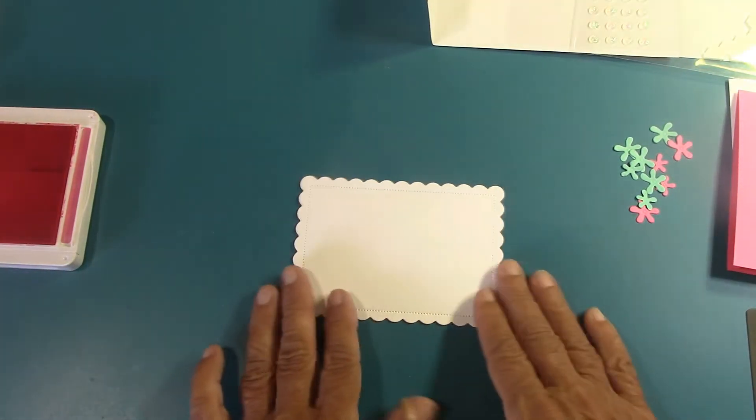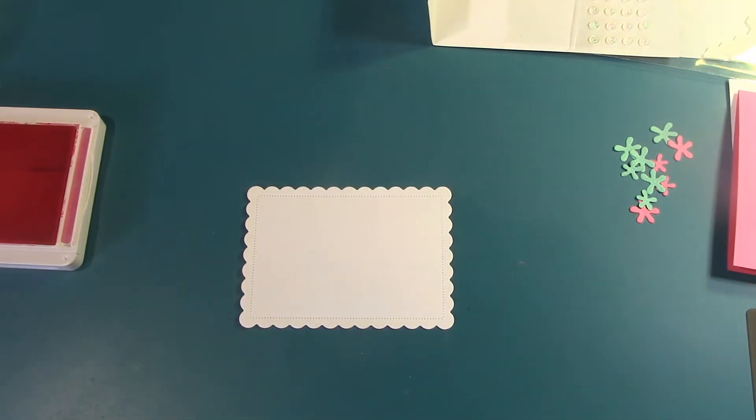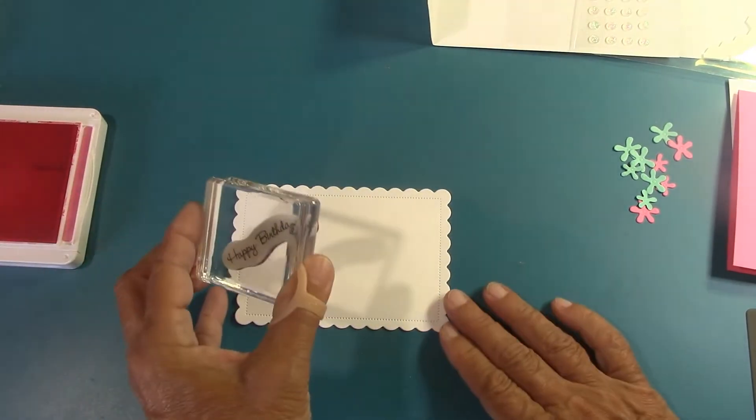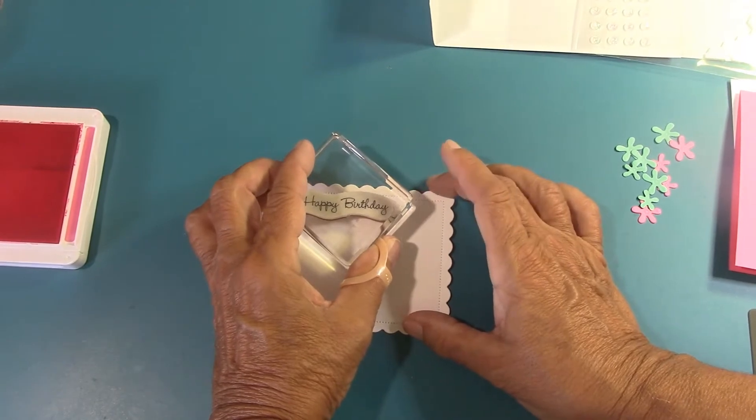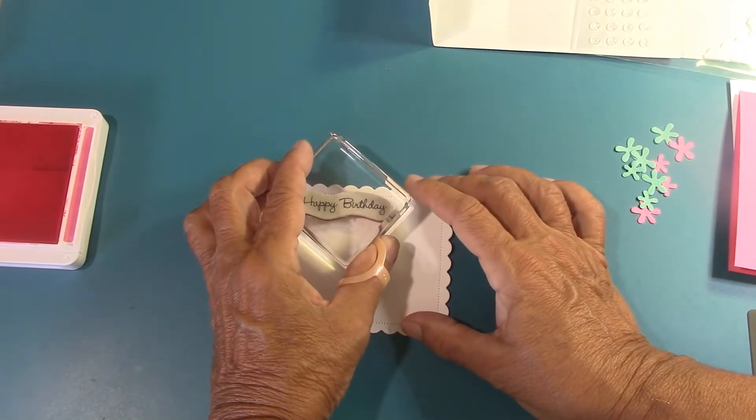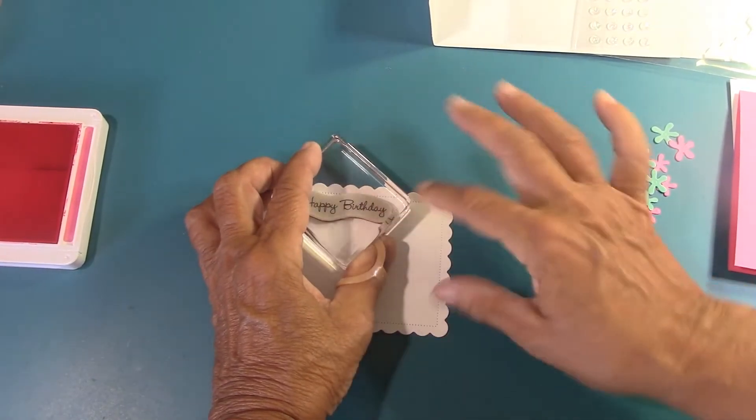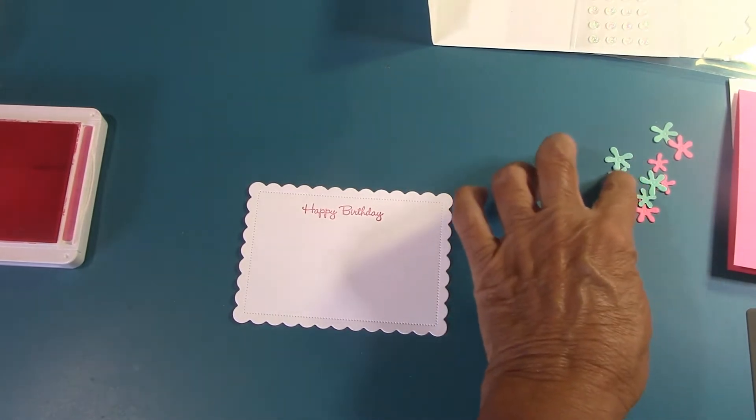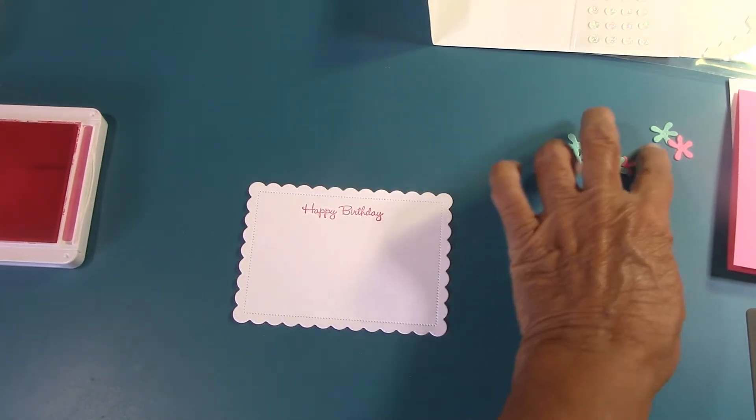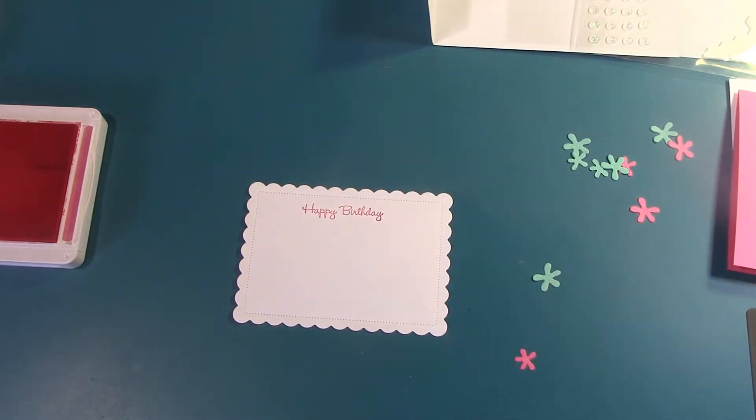Here's the inside of the card with the scallop contour die. And we'll go ahead and stamp happy birthday, again from GoToGreetings, in polished pink. Let me see if I can get this straight. I'm on the side of the camera and I'm sorry if I hit it and it's shaking. We did good. Okay, now I'm going to put just two little flowers here, a large blue one and a small pink one. Let's put that inside.